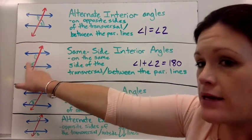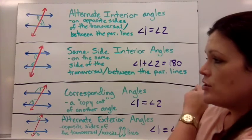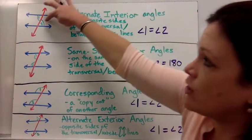But these are not equal. They add up to 180. So you need to know that those would add up to 180. Alternate interior are equal.